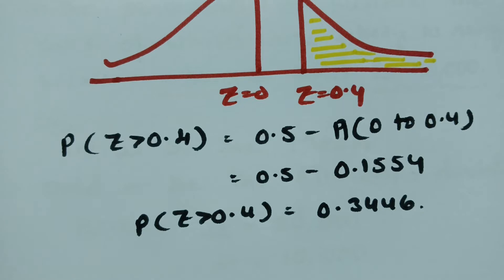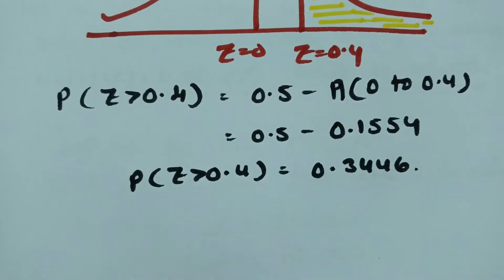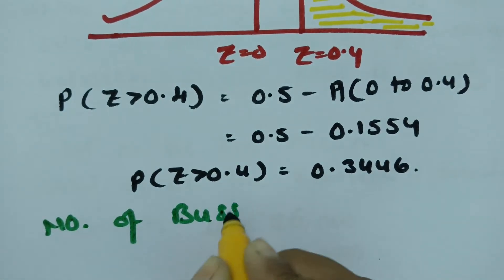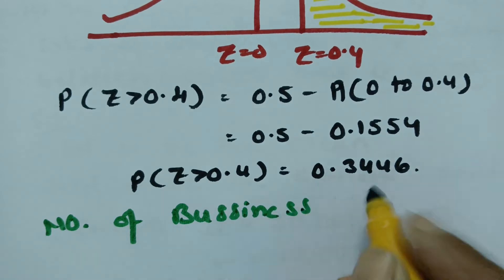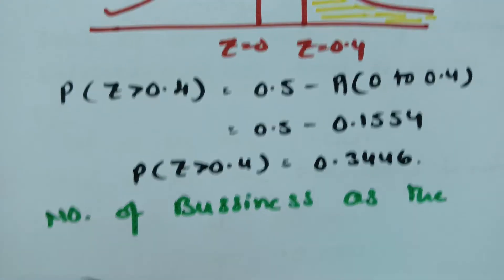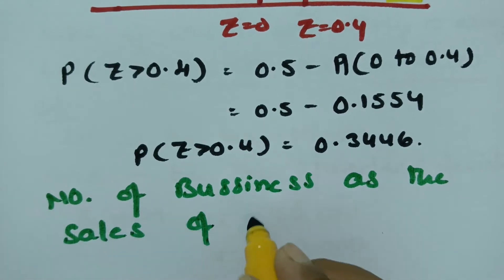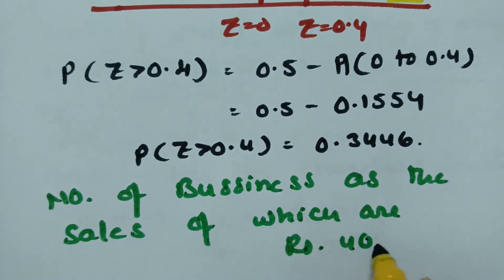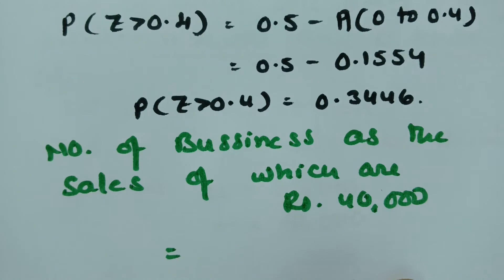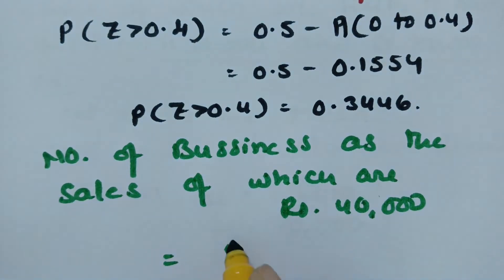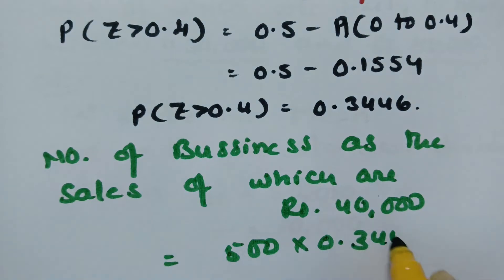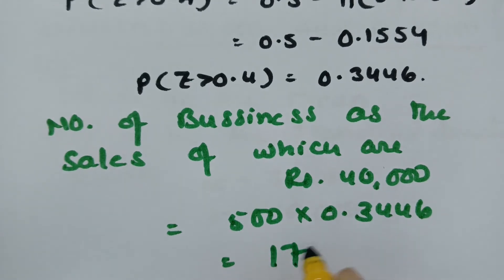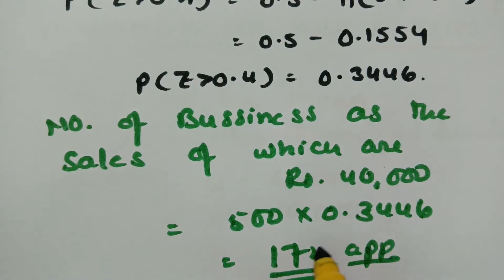The area between z = 0 and z = 0.4 is 0.1554. Therefore, P(z > 0.4) = 0.5 - 0.1554 = 0.3446. The number of businesses with sales above rupees 40,000 is 500 × 0.3446, which is approximately 172 businesses.